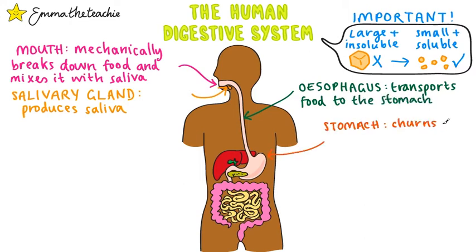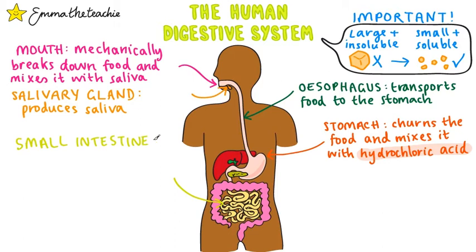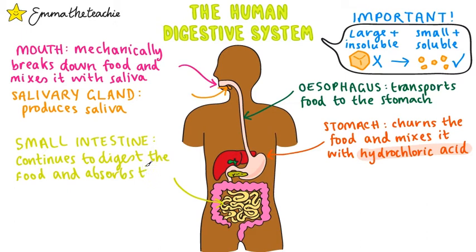The stomach is where the food is churned and mixed with hydrochloric acid. It's important that you learn the name of this acid. It then passes into the small intestine, where it continues to digest the food and absorbs the resulting small soluble molecules.